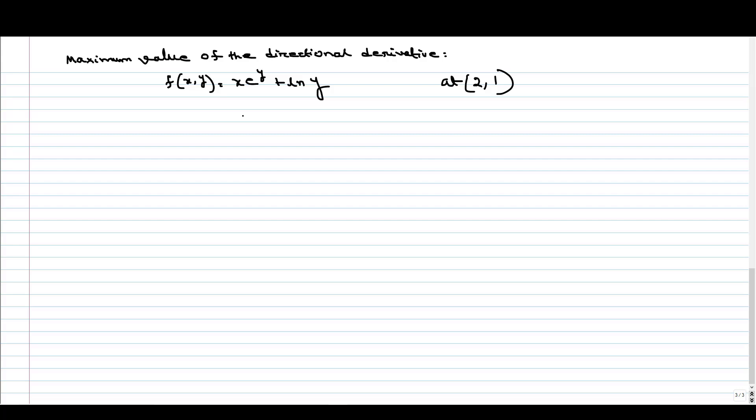And we have to calculate the maximum value of the directional derivative at (2,1). So again what we have to do, we know that we have to find the gradient vector first.